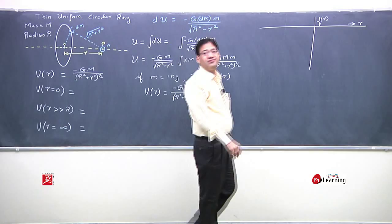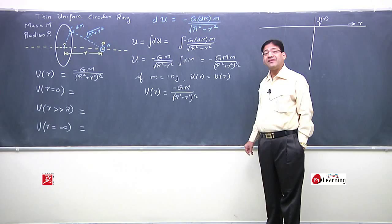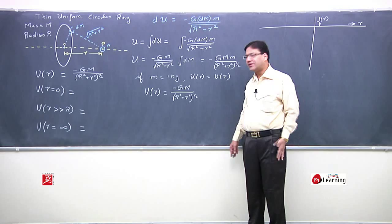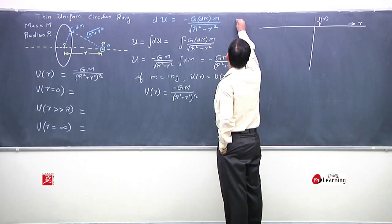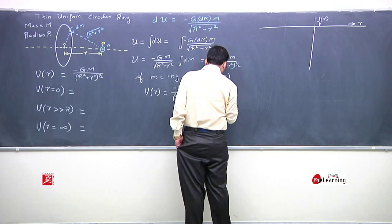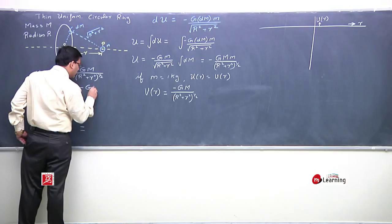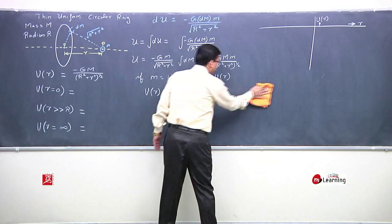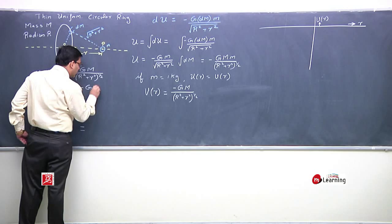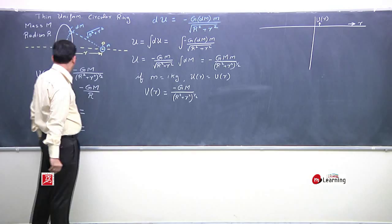If we put r equal to zero, what will be the gravitational potential at r equal to zero? If I put r equal to zero here, r square will become zero, only R square remains. So V at r equal to zero is minus G M by R. This is gravitational potential at its center.